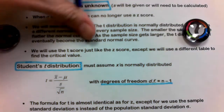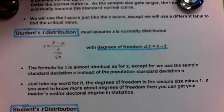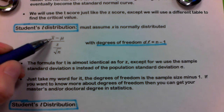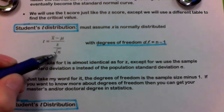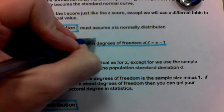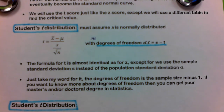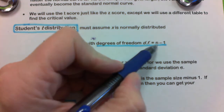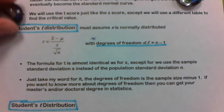The T value is X bar minus mu, divided by S divided by the square root of N. One thing we're going to be discussing is what's called the degrees of freedom. All you really need to know is that you're going to take N minus 1.